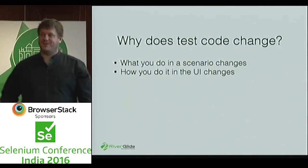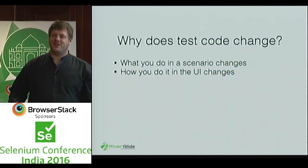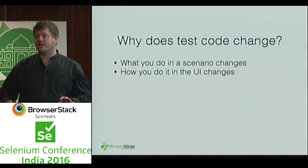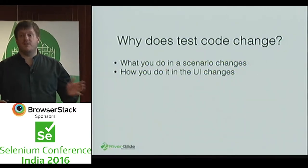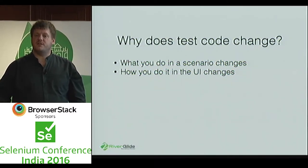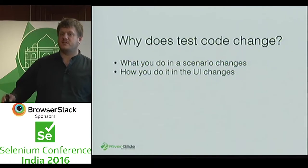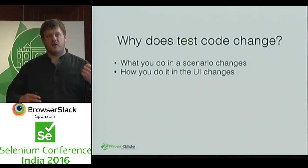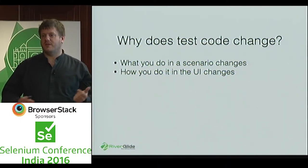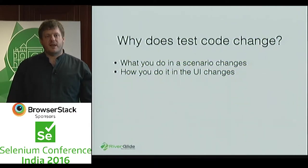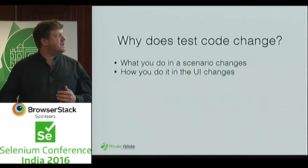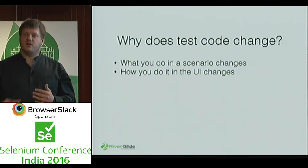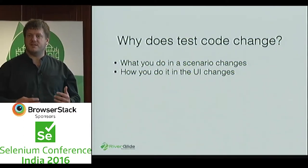When we're working with our tests, quite often we'll find that certain things have to change fairly regularly. It might be that the UI changes, or it might be that something we have to do changes the actual method or task that we have to perform. And what that can lead to is a change happening in the application. One of the most common complaints about testing is that the tests are brittle. But it's not really that the tests are brittle — it's more that there's not enough communication between the people who are doing the testing and the people who are writing applications.